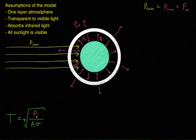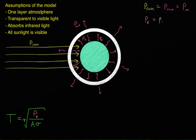The energy radiated outward from the atmosphere is the same as the energy radiated inward. Now, if the Earth itself is going to be at a constant temperature, the energy radiated outward from the Earth's surface has to be equal to the energy radiating inward. There are two sources: the radiation from the sun coming through the atmosphere and hitting the Earth, and then also this P-in — the inward radiation from the atmosphere. So we can say that P-sub-e, the power radiated from the Earth's surface, is equal to P-sun plus P-in.